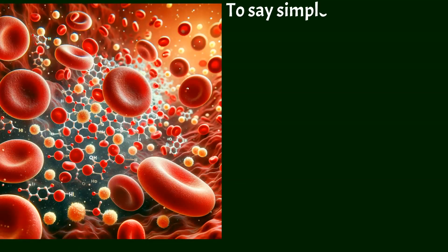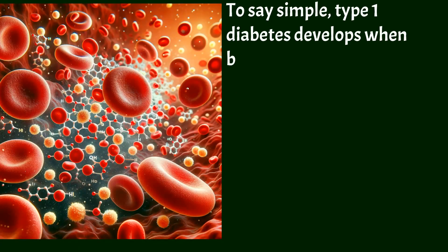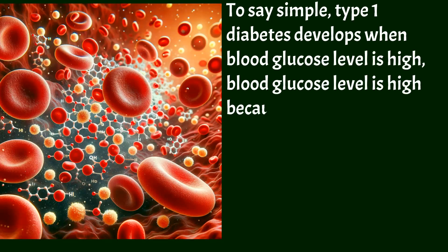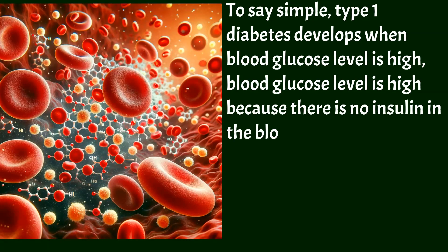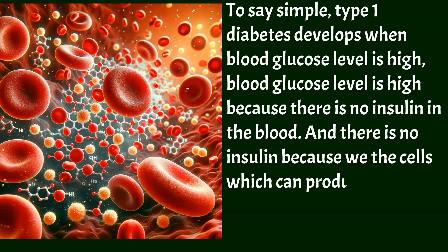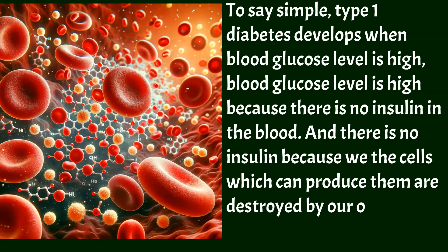To put it simply, type 1 diabetes develops when blood glucose level is high. Blood glucose level is high because there is no insulin in the blood, and there is no insulin because the cells which can produce it are destroyed by our own immune system.